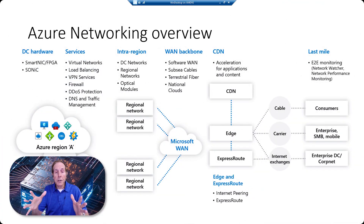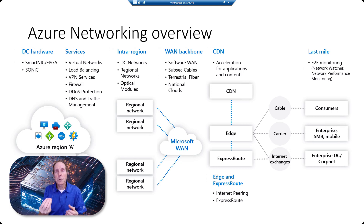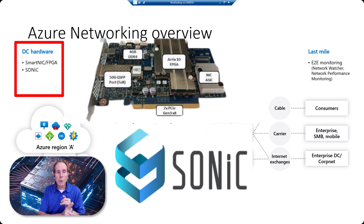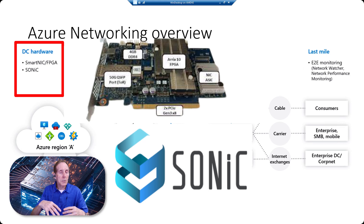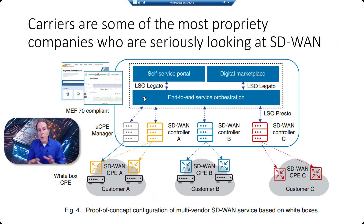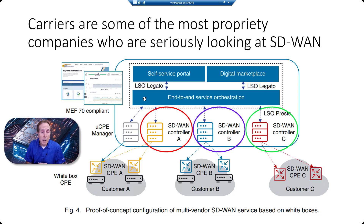Azure is proprietary, but even big proprietary SDN implementations plug in open source components. On the hardware side, you see Sonic and SmartNIC field programmable gate arrays. Microsoft developed Sonic, which is an open source switch operating system and now one of the most popular in the world with over 4 million ports. Carriers are also seriously looking at software-defined WAN controls, with proof-of-concept multi-vendor SD-WAN services running on top of white box hardware.